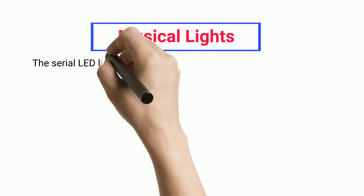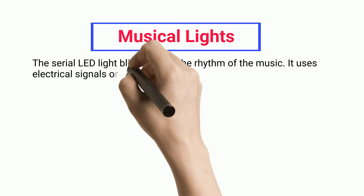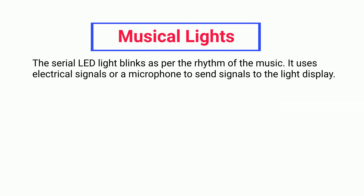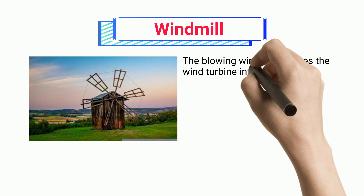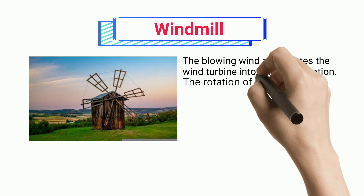Musical lights: The serial LED lights blink as per the rhythm of the music, using electrical signals or a microphone to send signals to the light display.